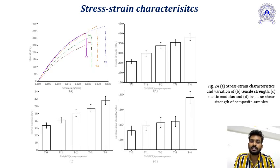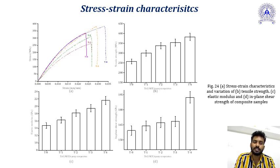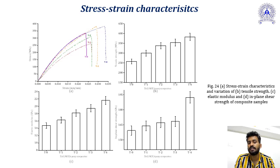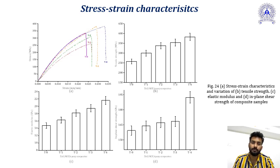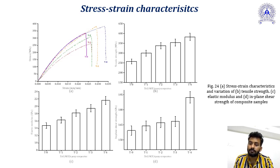The stress characteristics of the sample were checked and it was found that the significant amount of stress absorbed by the system increases, along with the tensile strength and elastic modulus of the sample. As compared to plain woven basalt fiber polymer composites, the addition of the ZnO nanostructure improves mechanical characteristics such as impact strength, tensile strength, and elastic modulus.